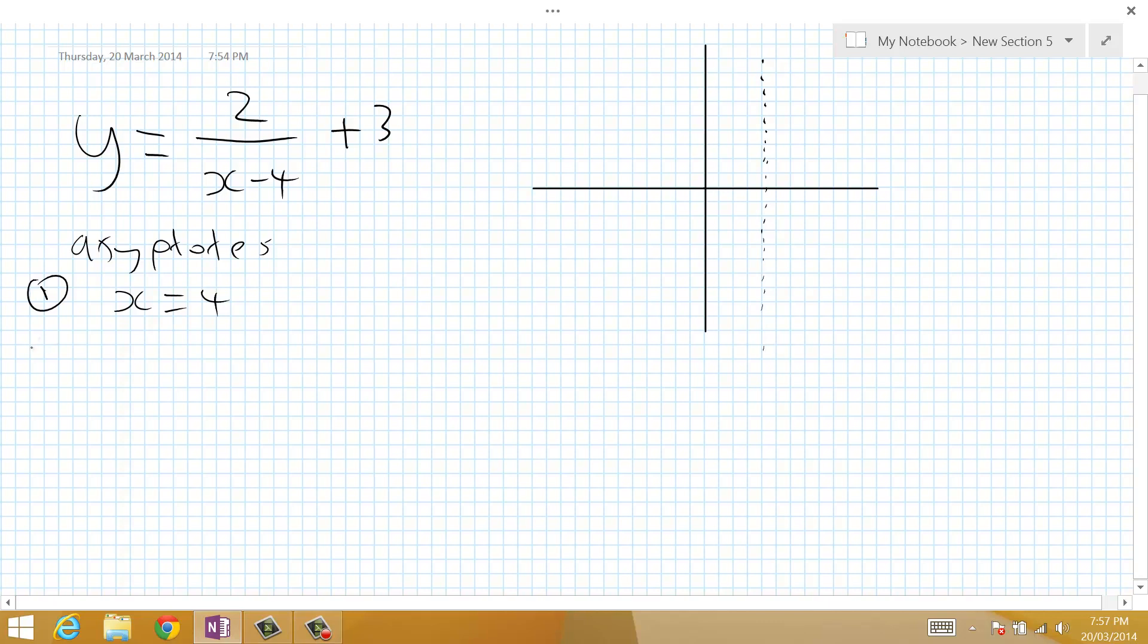The second asymptote can be determined by the fact that the fraction in the asymptote equation can never equal 0, simply because the numerator is not 0. A fraction only equals 0 if the top part of the fraction, the numerator, is 0. In this case it's not, it's 2.